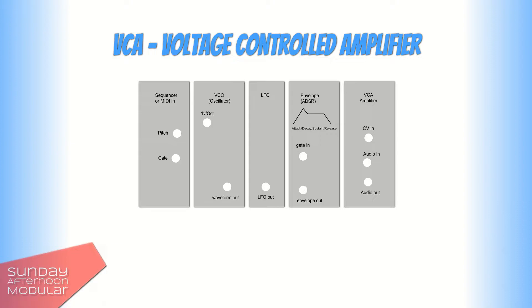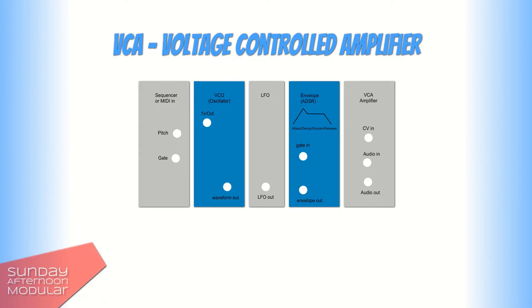If you watched my basic synthesizer video, it's linked in the video description, you know that for a basic modular synth you need at least a VCO, an envelope generator, and a VCA. The VCO brings the tone, the envelope generator controls the tone, but what does the VCA do?